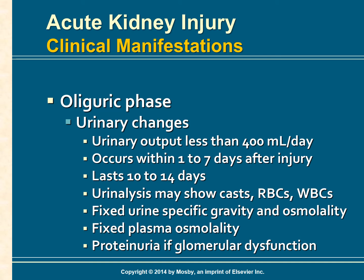A urinalysis may show casts, RBCs, and white blood cells. The casts are formed from mucoprotein impressions of the necrotic renal tubular epithelial cells, which detach or slough into the tubules. The urine specific gravity is fixed at around 1.010 and osmolality at about 300 milliosmoles per kg, reflecting the loss of concentrating ability by the kidneys. With glomerular membrane dysfunction, proteinuria may be present.